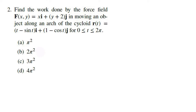The next one is a longer one. Find the work done by the force field F(x, y) = xi + (y + 2)j, in moving an object along an arc of the cycloid r(t) = (t − sin t)i + (1 − cos t)j, for t from 0 to 2π. For this one, we're going to have to use the F·dr formula for work, which expands to the integral from t₁ to t₂ of F(r(t)) · r′(t) dt, substituting in the x and y values given by our position function.